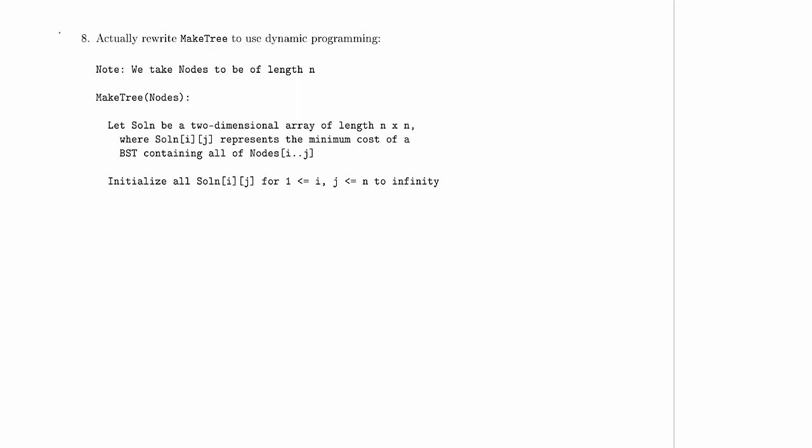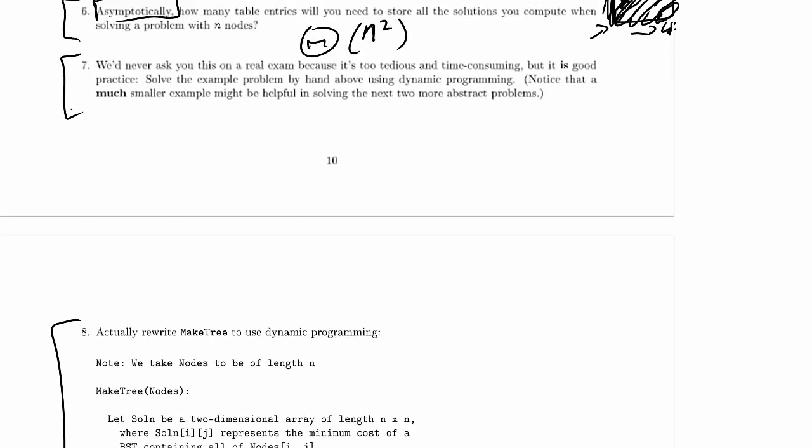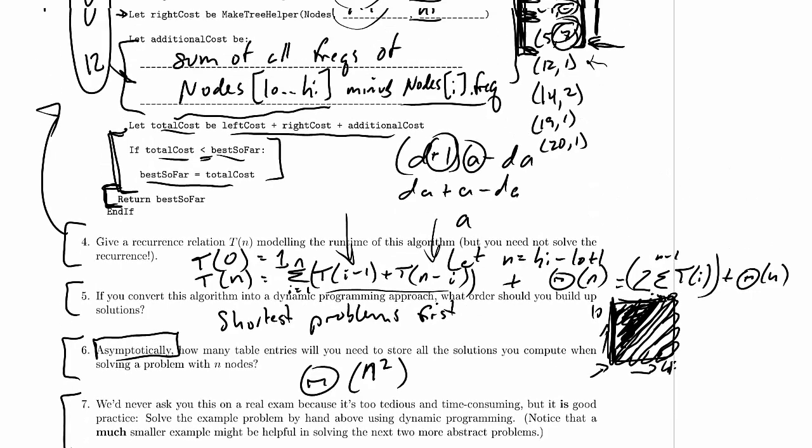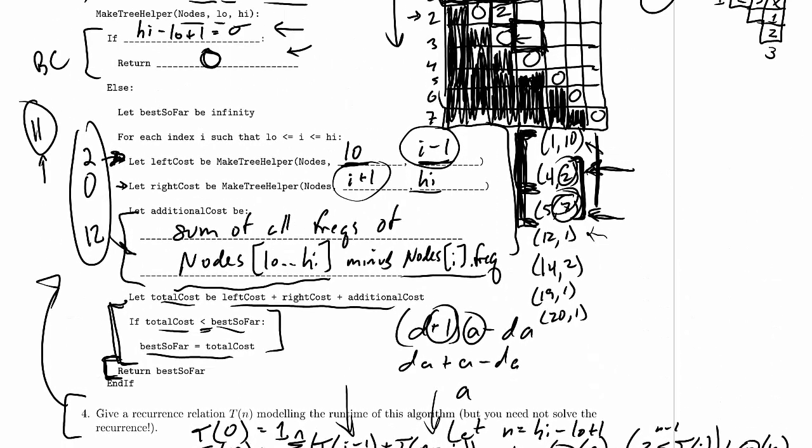Welcome to Computer Science 320 2014 Winter 2 Midterm 2 Practice Problem Screencast number 6.8. At this point we're converting our recursive algorithm for MakeTree to use dynamic programming. Probably the most useful thing to start with is to go back and grab the heart of our recursive algorithm because we're going to use that to build our dynamic programming algorithm, and that is effectively the recurrence.